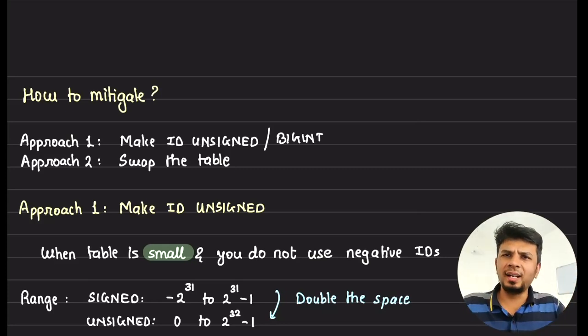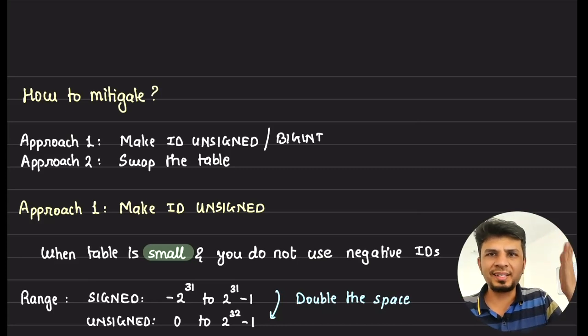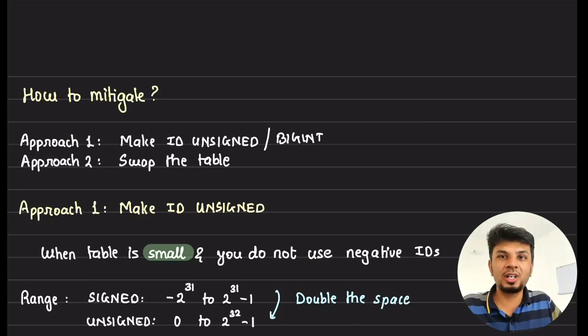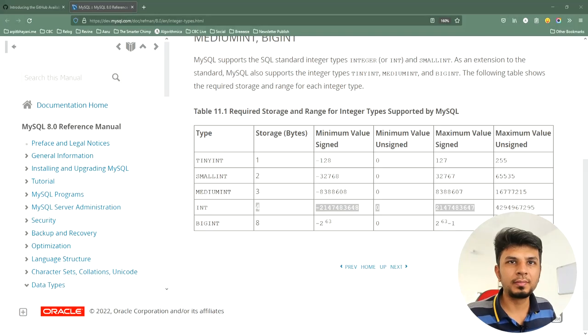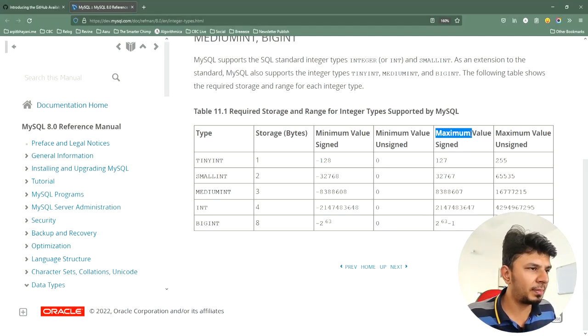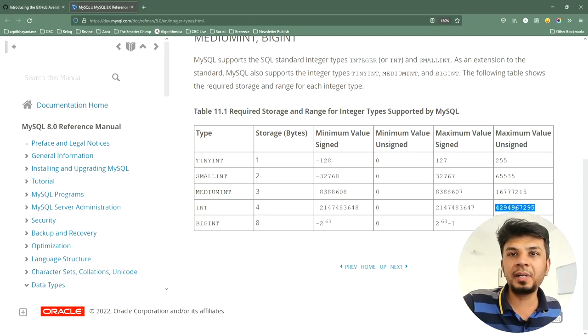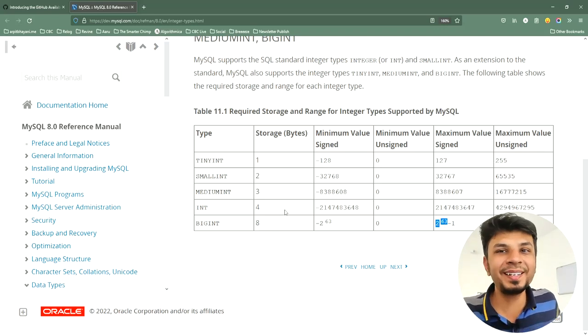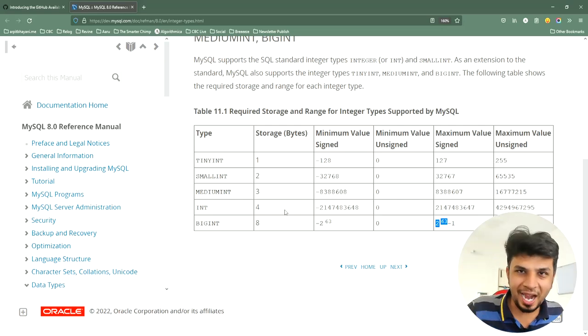So the two approaches: approach number one, make ID bigger. So alter the table. Your ID was a signed integer, make it an unsigned integer, or make it a bigger integer. Because as soon as you make it an unsigned integer, you get a bigger range, because signed integer starts from negative 2 raised to 31 to positive 2 raised to 31 minus 1, but an unsigned integer, the maximum unsigned value is 4 billion, so you can directly double your space. Otherwise you can go for a big int, which is 64 bits, which is 8 bytes in size, which means 2 raised to power 64. You would never hit that. Possibly you would never hit that. But that's an immense, gigantic range.